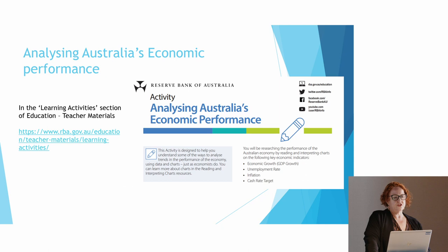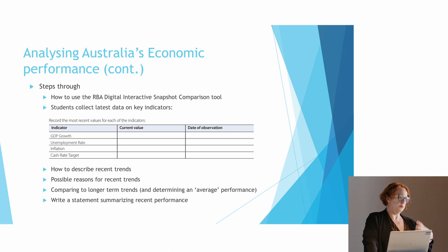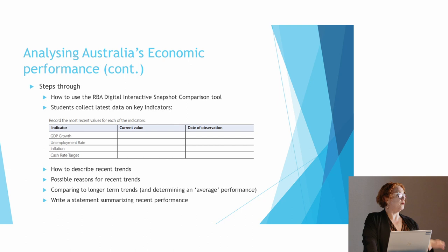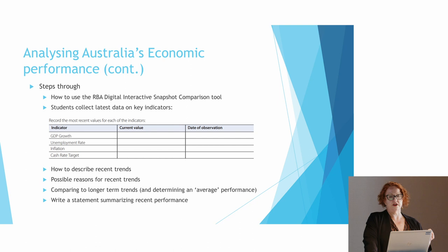There's also a worksheet about analysing Australia's economic performance. It provides guidance on how to use the RBA's digital interactive snapshot — the bespoke chart generator. Students collect the latest data on key indicators, learn how to describe trends, consider possible reasons for trends, compare to longer-term trends, and write a statement summarising recent performance. It's totally accessible, I think, for anybody from year nine up.